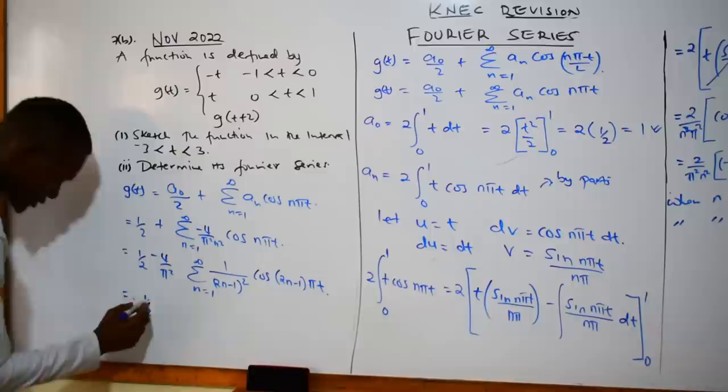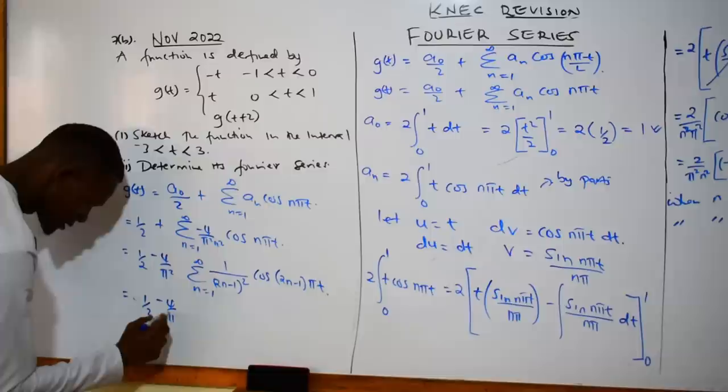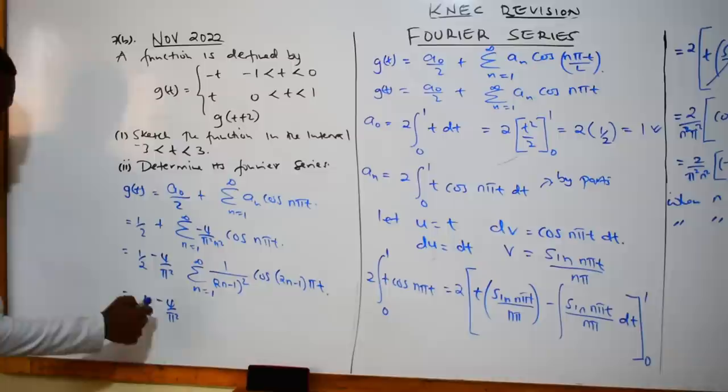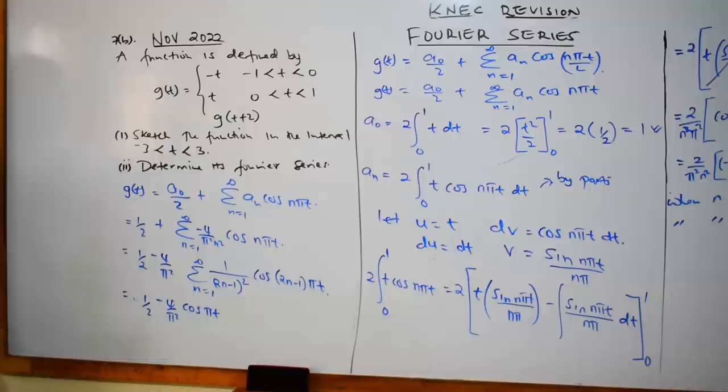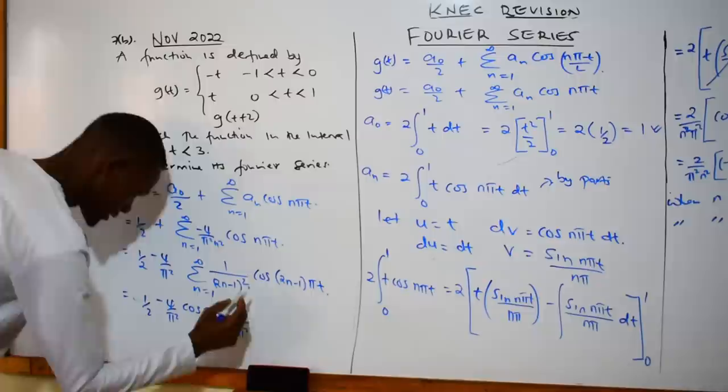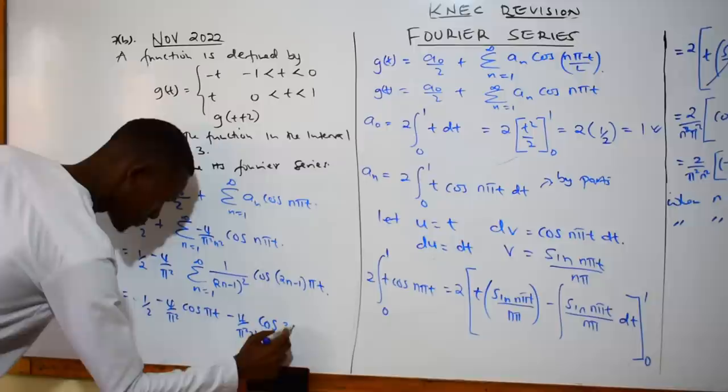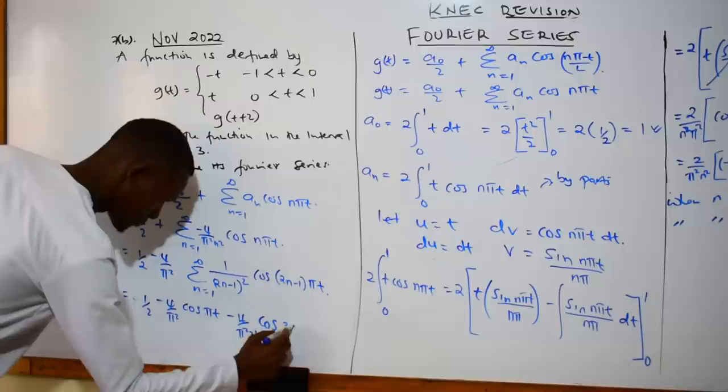Expanding individual terms: g(t) = 1/2 − (4/π²)cos(πt)/1² − (4/π²)cos(3πt)/3² − (4/π²)cos(5πt)/5² − ... Both the compact summation form and this expanded form are correct. That is the general Fourier series representation of g(t).